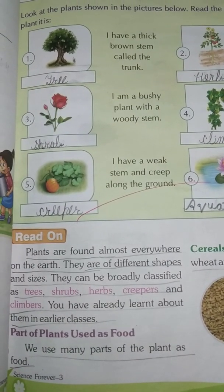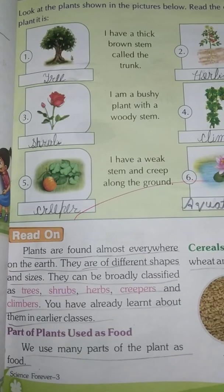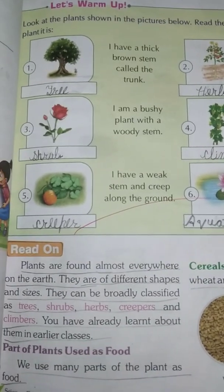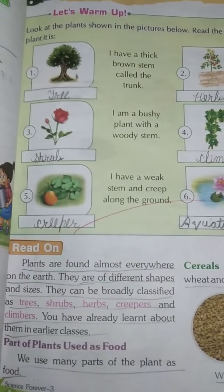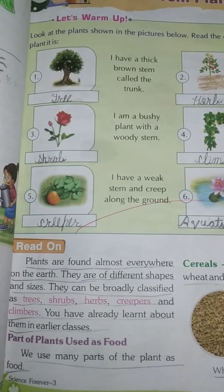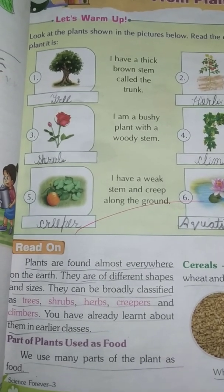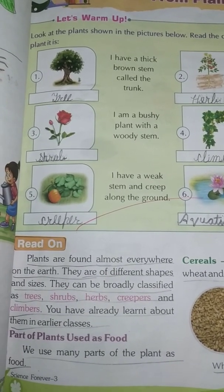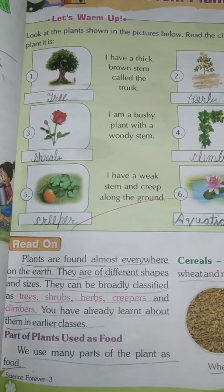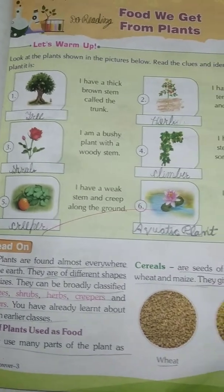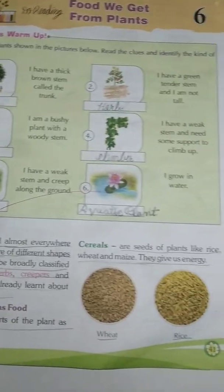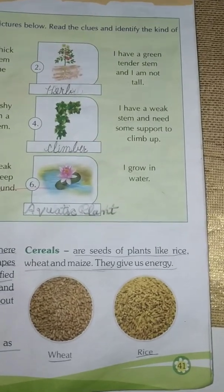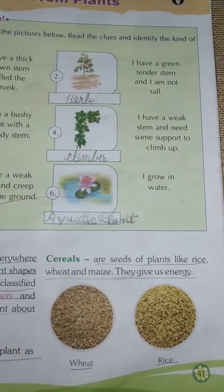Now we will revise the parts of plants used as food. We use many parts of the plant as cereals. Cereals are seeds of plants like rice, wheat, and maize. They give us energy. Wheat and rice give us energy.